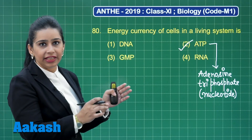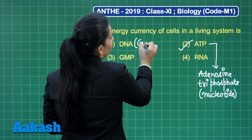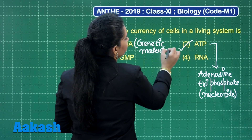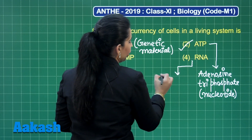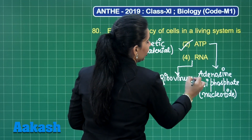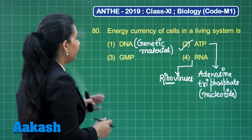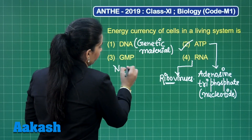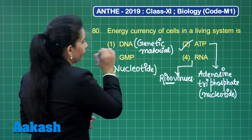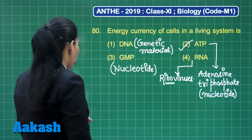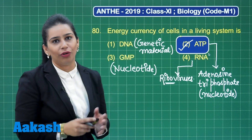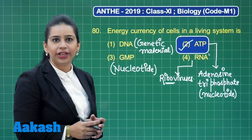DNA and RNA are the genetic materials. DNA is the genetic material in almost all living organisms, except the riboviruses which have RNA as genetic material. GMP — guanosine monophosphate — is also a nucleotide, but the correct answer to this question is option number 2: ATP is the energy currency of our body.